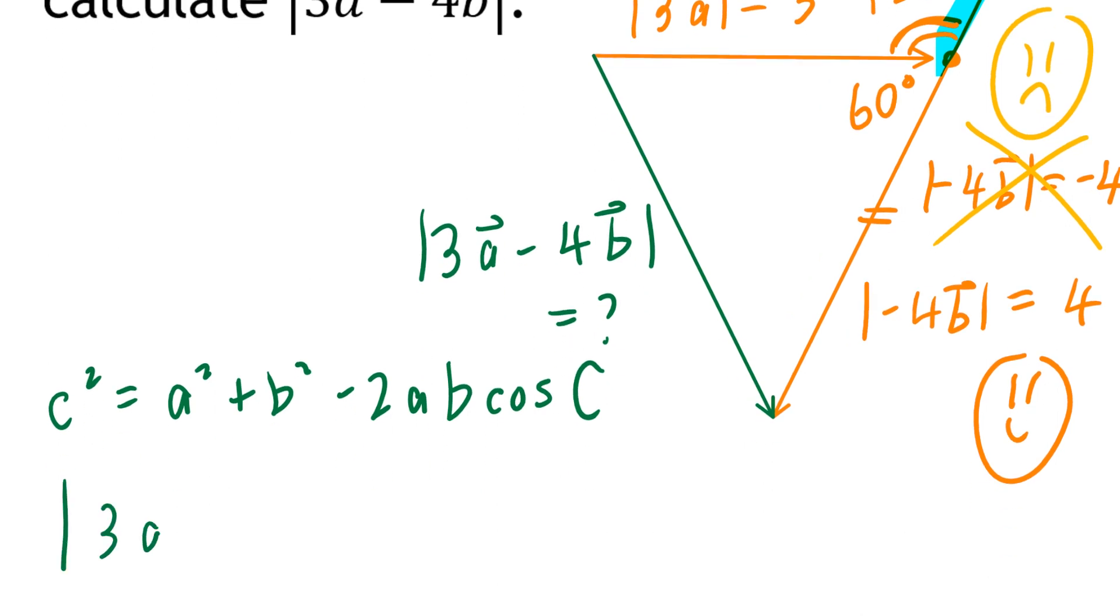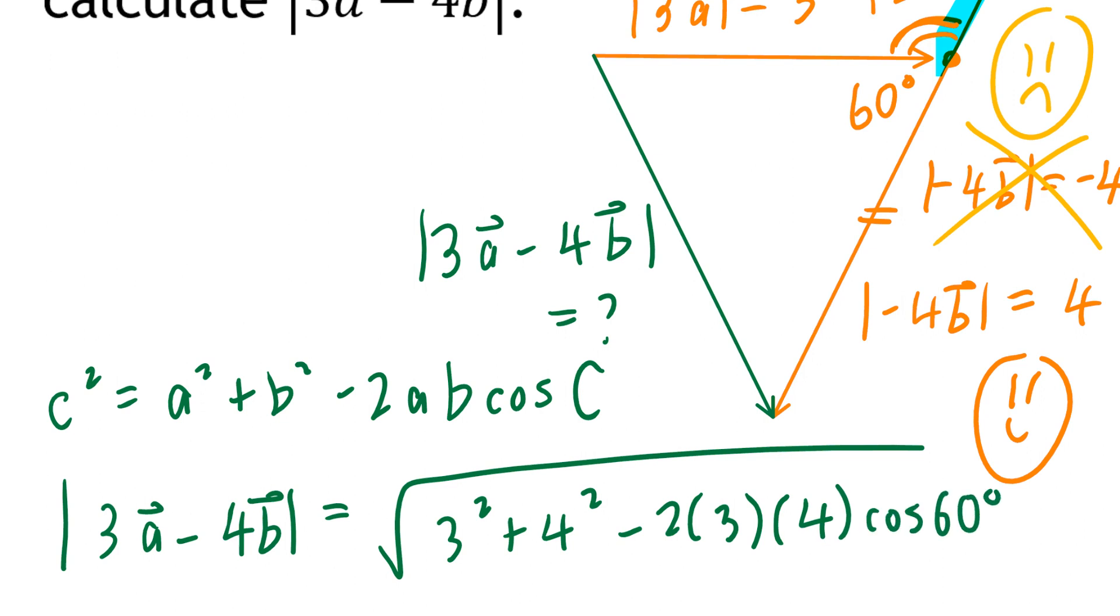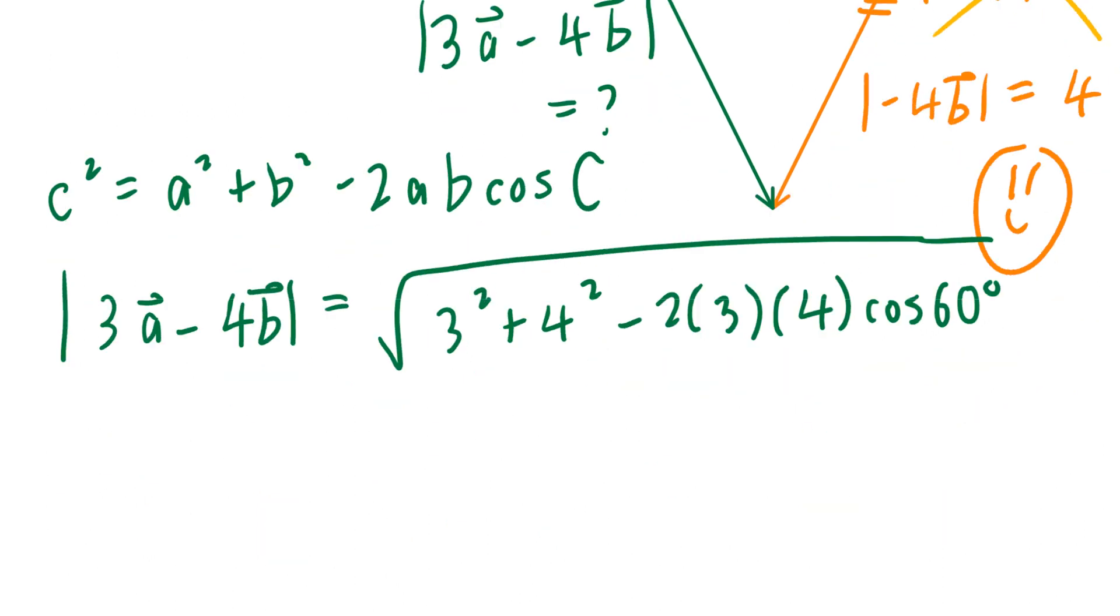So in this case, when I think about the magnitude of 3a minus 4b, this basically is going to be the square root of 3 square plus 4 square minus 2 times 3 times 4 cosine 60 degrees.